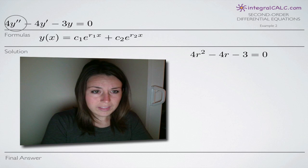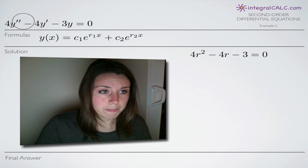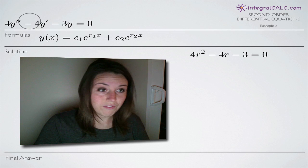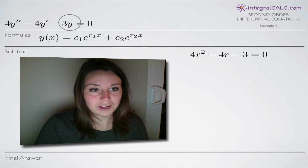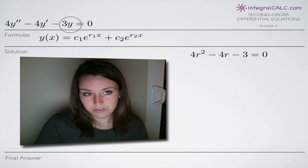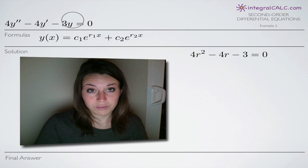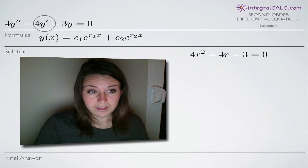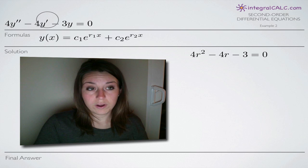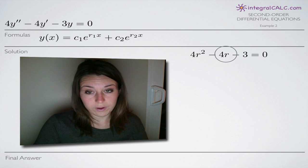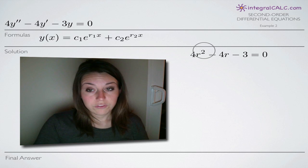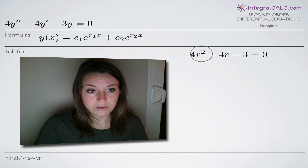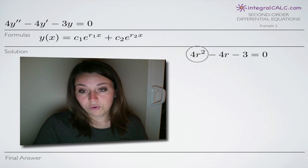If you have trouble remembering the substitution, you can think of each hash mark as an exponent. So y with no hash marks is like y to the zero — anything to the zero power is 1, so replace y with 1. One hash mark means y to the 1, so replace it with r. Two hash marks means y squared, so replace it with r squared. That's the trick for converting to an equation with r's.